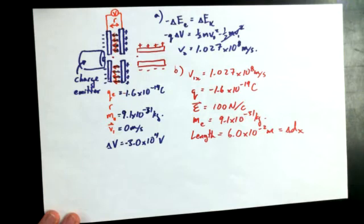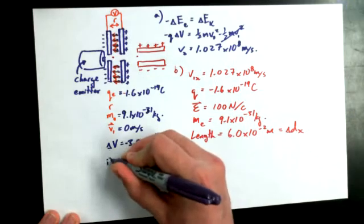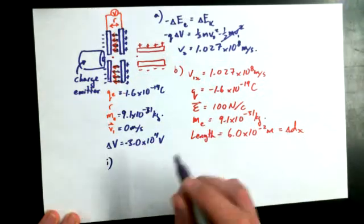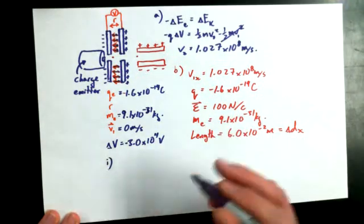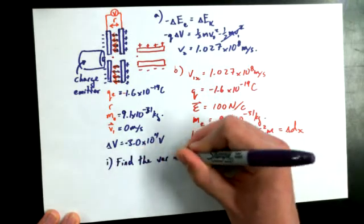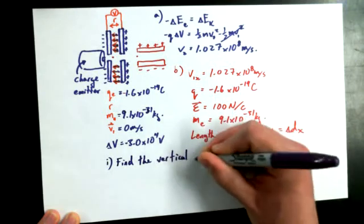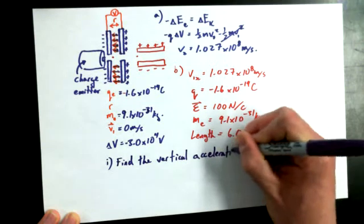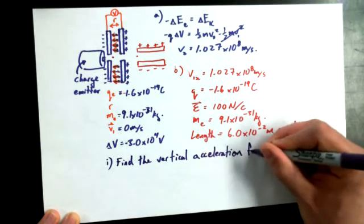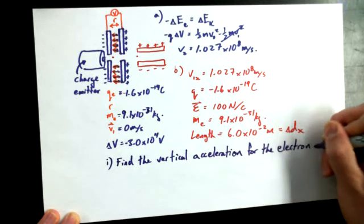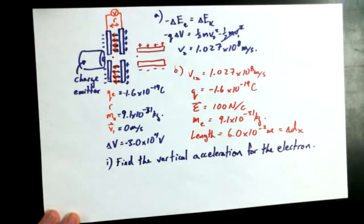I want to use part B to describe the projectile motion. So my question within a question in describing the projectile motion here would be, let's call it B subpart i, could be find the vertical acceleration for the electron.